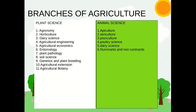Branches of agriculture — there are two branches of agriculture: plant science and animal science. Under plant science: agronomy, horticulture, dairy science, agriculture engineering, agriculture economics, entomology, plant pathology, soil science, genetics and plant breeding, agricultural extension, agriculture botany, and etc.